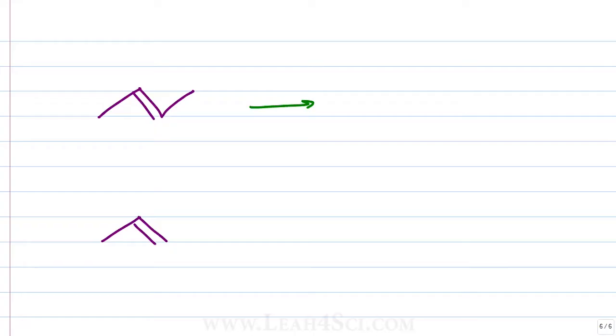One way to learn your alkyne mechanisms is to recognize that an alkyne has two pi bonds, while an alkene has one pi bond, but much of the concept in how they react is very similar — the pi bond is going to attack. As a refresher, if I have an alkene undergoing acid catalyzed hydration, shown as H+ and H2O, the mechanism has the pi bond attacking the H+, a carbocation forms, and we get an alcohol product.